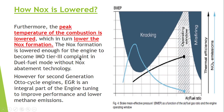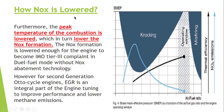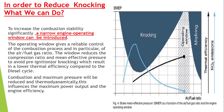NOx formation is lowered enough for the engine to become IMO Tier 3 compliant in dual fuel mode without NOx abatement technology. However, for second-generation Otto engines, EGR is an integral part of engine tuning to improve performance and lower methane emissions. To summarize: NOx is reduced by lowering the compression ratio and mean effective pressure, which lowers peak combustion temperature and hence NOx formation, while also avoiding pre-ignition.